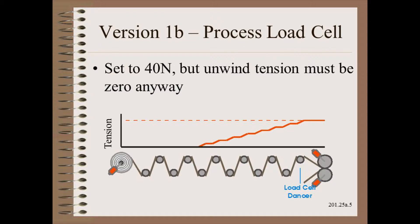While moving the load cell or dancer closer to what might be a more important location is not necessarily a bad idea, it doesn't really change a thing. Unwind tension would still be zero. Obviously, with these two examples, we are not anywhere close to making things work, no matter where we put the load cell or dancer.